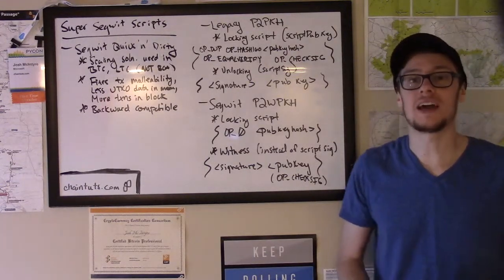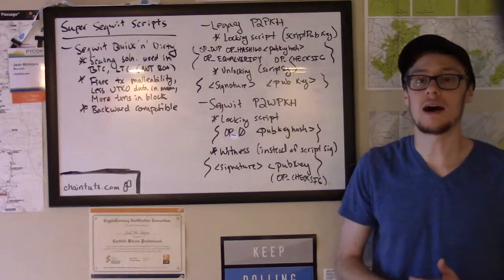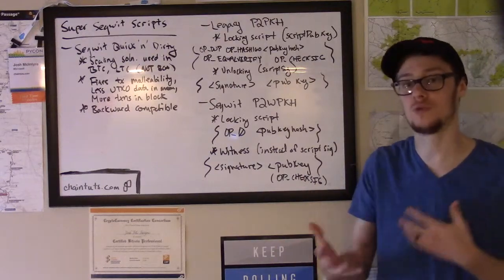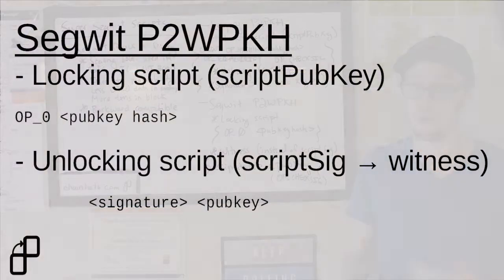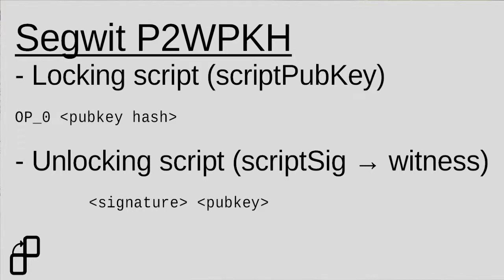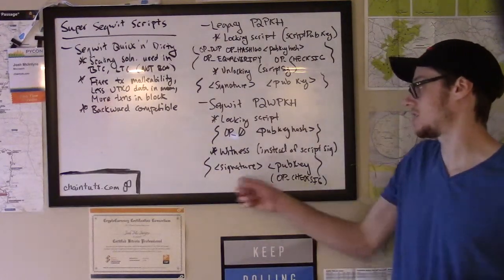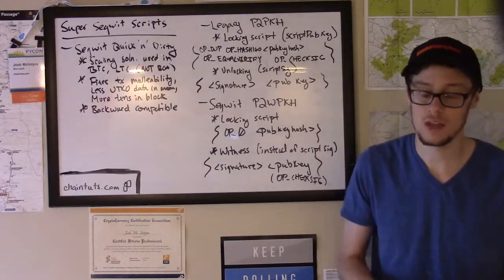Instead of a scriptSig included in the transaction itself, SegWit segregates the witness that proves ownership of the funds to a new data structure called the witness. So the scriptSig is actually left empty in a segregated witness transaction. This witness is actually the same sort of witness that you would see with a traditional transaction containing a signature and a public key. And when a SegWit compatible node validates this transaction, it simply sees this witness as signature, public key, and OP_CHECKSIG.